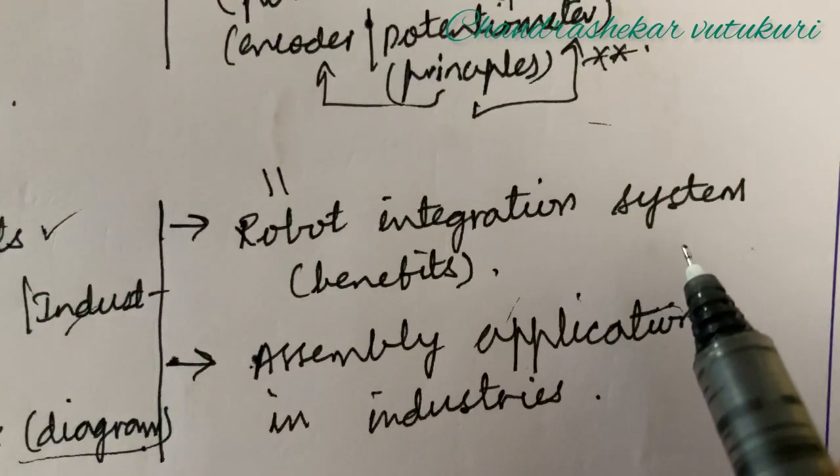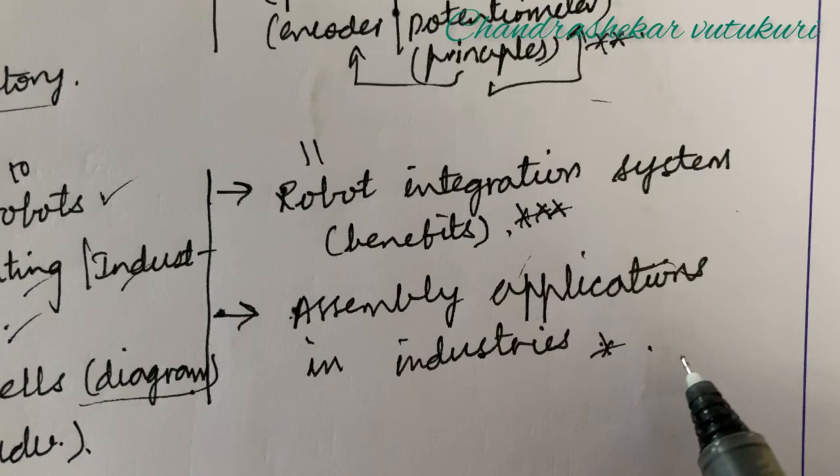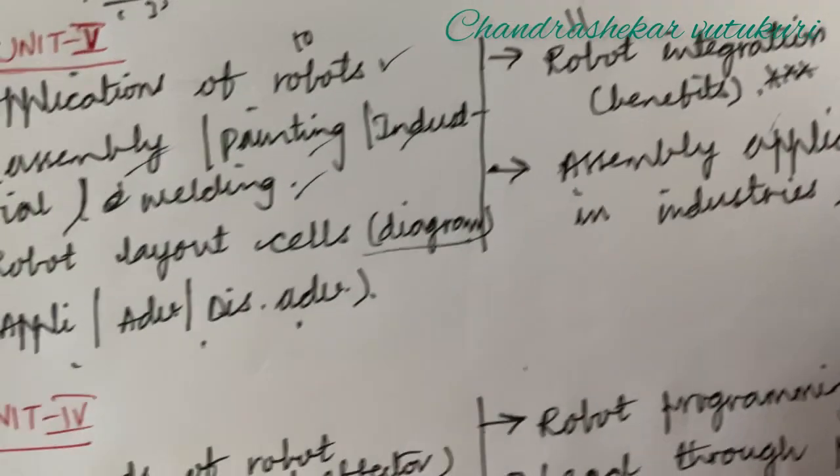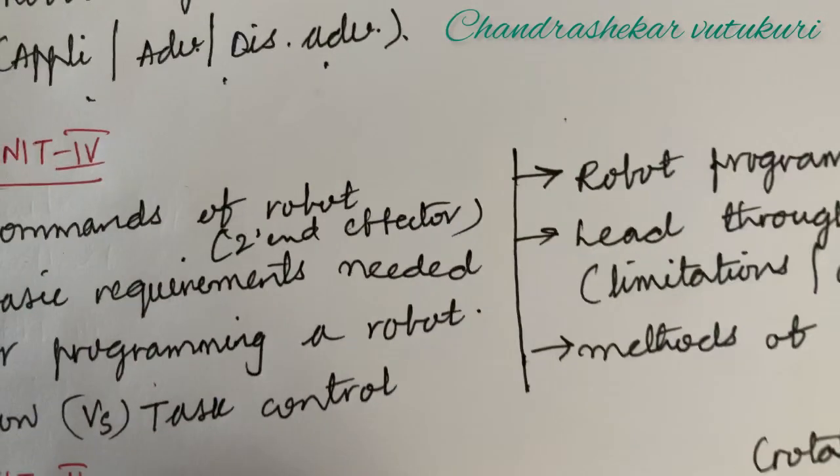Related to applications, you are going to get damn sure one question this time. The robotic layout cell along with the diagram and their applications, advantages and disadvantages. This is set with the 10th as well as 11th question. The robot integration system and their benefits is set with the topmost question, and assembly applications in the industry line you are supposed to work out with the neat sketch.